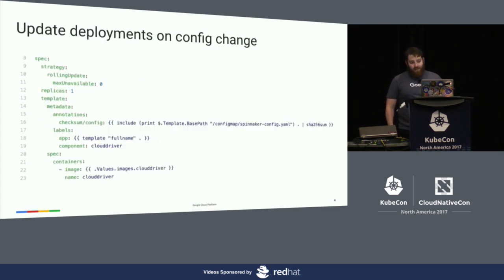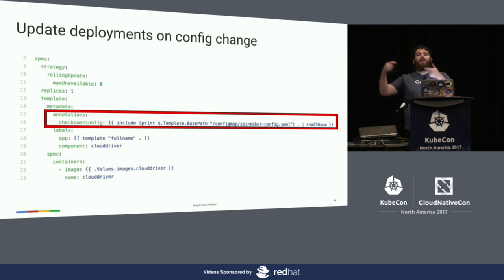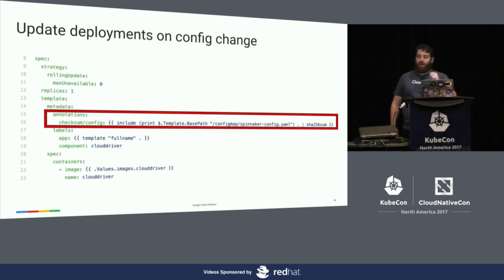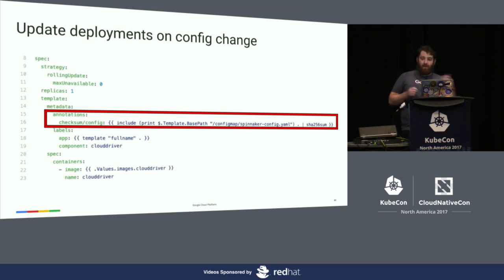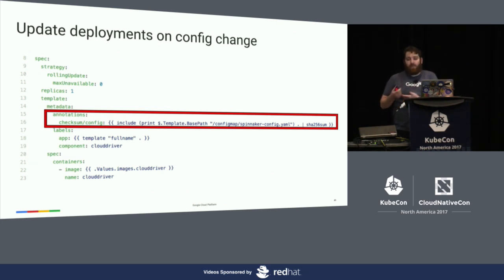Here's a trick I really like — I've used it in a couple of charts. I want to be able to change a config map in my chart and have it automatically update my deployment. I add an annotation to the deployment and use sprig functions to put in a checksum of my configuration. I'm templating out the config file 'spinnaker-config.yaml' and getting the checksum of its contents, then putting that into an annotation. Every time the config file changes, it's going to roll out a new deployment because that annotation changed. Some applications will detect that the config map has changed and reload themselves, but for those that aren't that smart, you can use this trick.